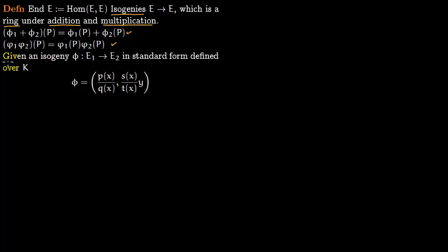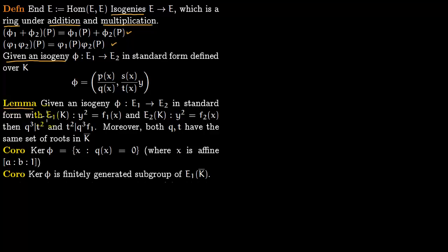Now let us come to the result we want to prove in this lecture. Say we are given an isogeny from one elliptic curve E1 to another elliptic curve E2, and this isogeny is given in standard form over some field K. This phi, as we have seen before, is P over Q and S over T times Y.